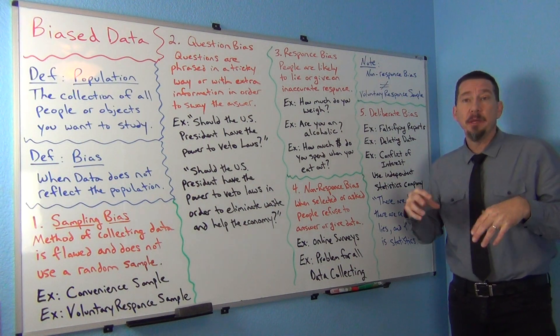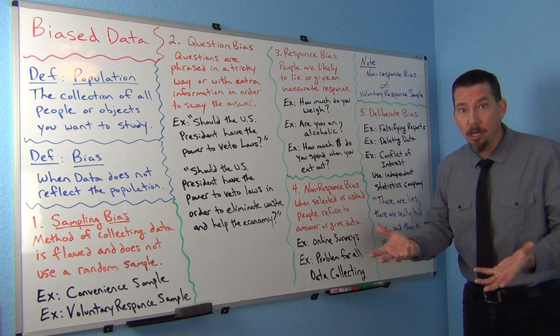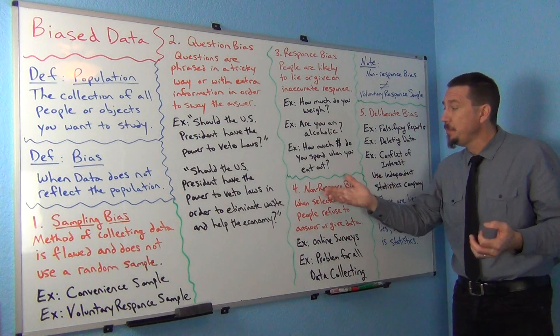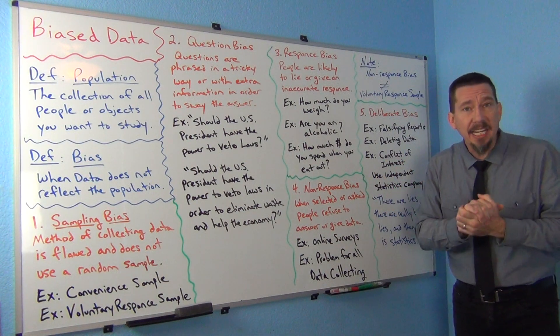When people are selected by a computer randomly, but they refuse to answer and refuse to take part, this is a huge problem in statistics nowadays. It's becoming more and more every year. It's getting so hard to get data.